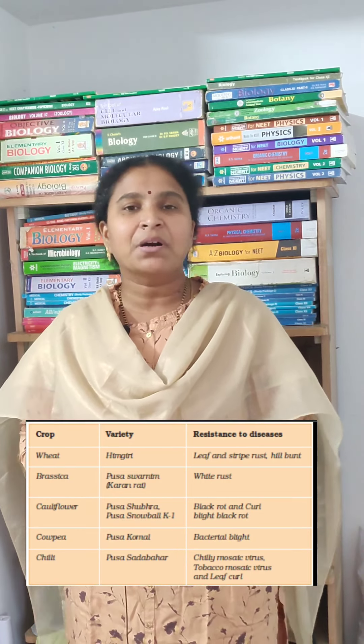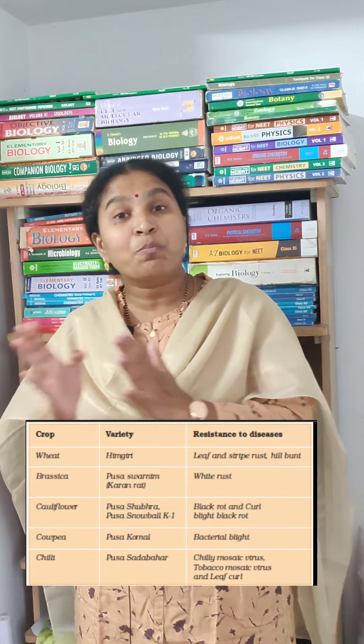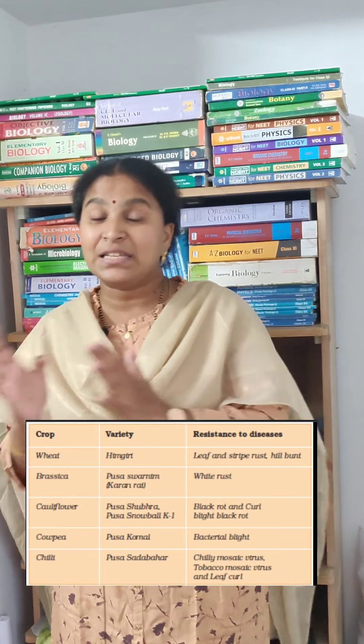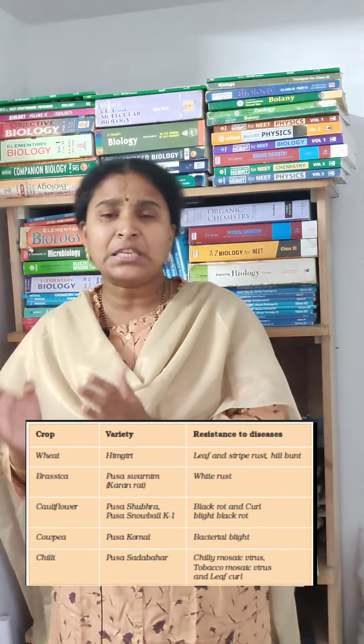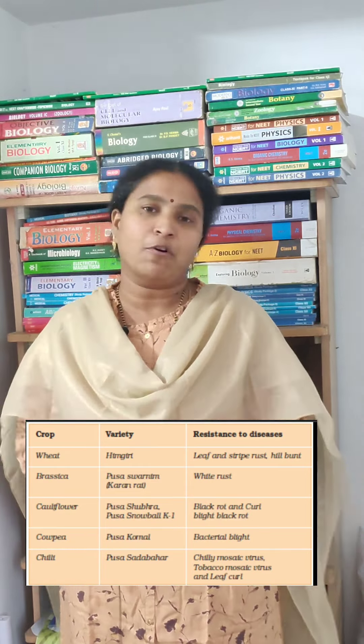The fourth plant is cowpea. A cow is very much komal (gentle/tender), so to remember cowpea, the variety is Pusa Komal. The Pusa Komal variety is resistant to bacterial blight. Remember bacterial blight will follow from this mnemonic.